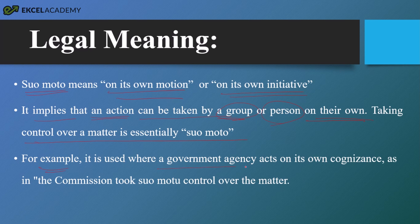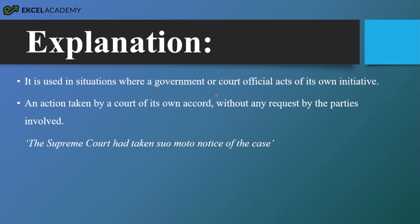For example, it is used where a government agency acts on its own cognizance — as in, the commission took up the case Suomoto. The commission took Suomoto control over the matter, meaning the commission on its own initiative has taken the matter under its control. It is used in situations where the government or court officials will act on their own initiative — an action taken by the court of its own accord without any request by the parties involved. No party is required to apply to the court; the court on its own, without any application, will take the matter under its control.